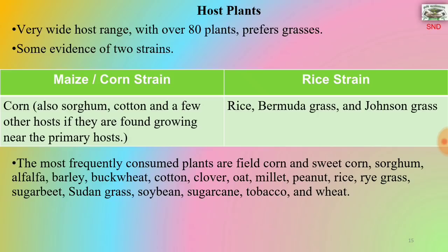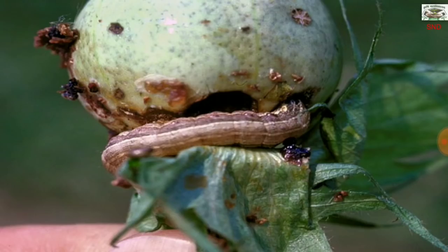The rice strain has its infestation on rice, bermuda grass and johnson's grass. The most frequently consumed plants are field corn and sweet corn, sorghum, alfalfa, barley, buckwheat, cotton, clover, oat, millet, peanut, rice, rye, sugar beet, sudangrass, soybean, sugar cane, tobacco and wheat. You can see a boll of cotton which is damaged heavily by this army worm.